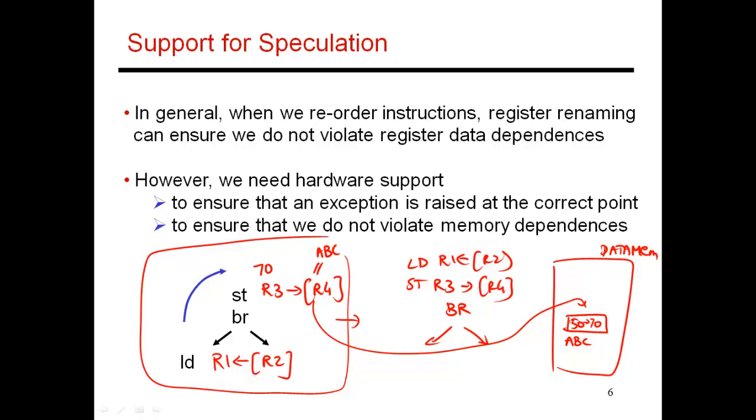Then later when I do the load, it so happens that R2 contains the address ABC. So I load from here and put 70 into this register. I should be leaving this point in the program with the value 70 sitting in R1.